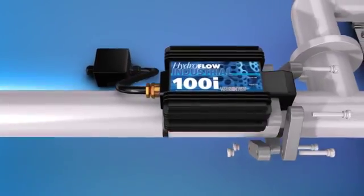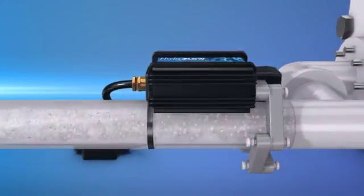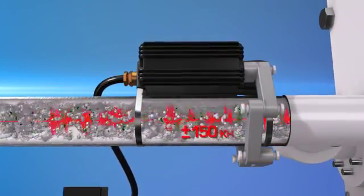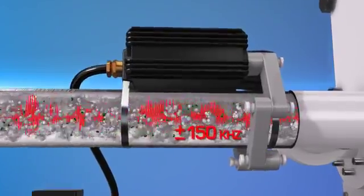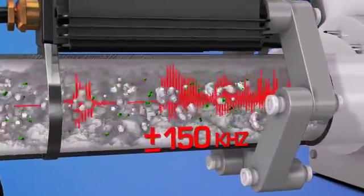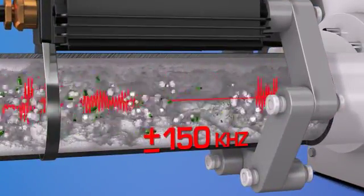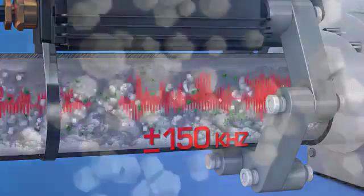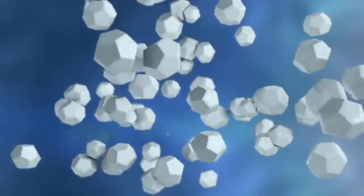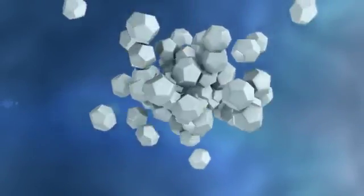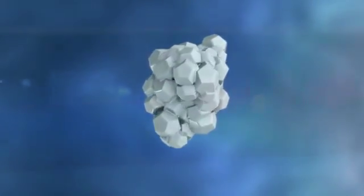The Hydroflow water conditioner applies an electric signal of 150 kHz throughout the piping system, causing the ions to form clusters. When supersaturation occurs, the clusters precipitate out of the solution and form stable crystals which do not adhere to piping and equipment.